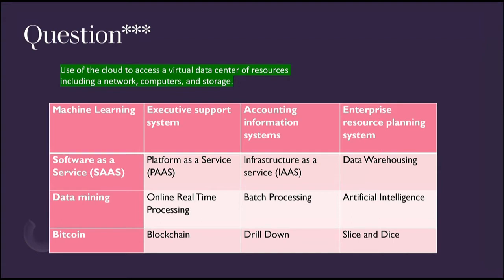They could give you a sim like this on all these IT terms, and the second question might be something like this: 'Use of the cloud to access a virtual data center of resources including a network, computers, and storage' — and right back to the same list. What would we pick? Is that software as a service, platform as a service, or infrastructure as a service? We've got to narrow down to these three cloud computing options. It would be infrastructure as a service, since they're asking about a virtual data center of resources — network, computers, and storage. That's all infrastructure.